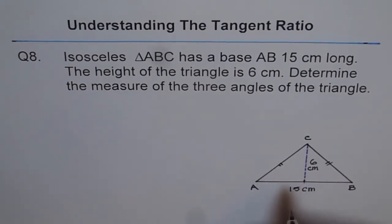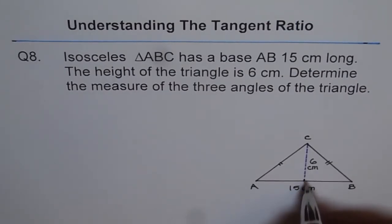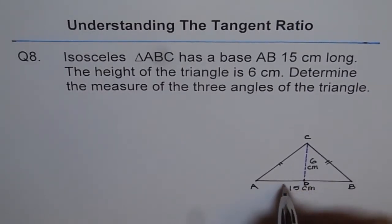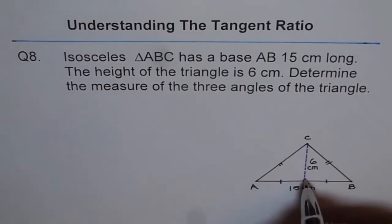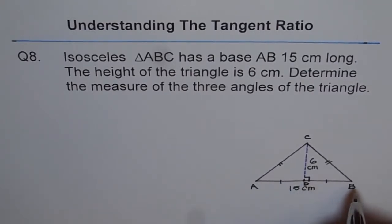Since the triangle is isosceles, AB is divided into two equal parts by the perpendicular. Let's say this point is D. In that case, AD is equal to DB. And this perpendicular makes 90 degrees with the base AB.